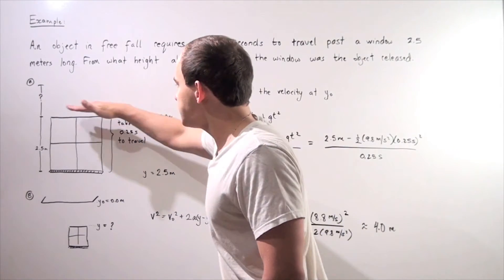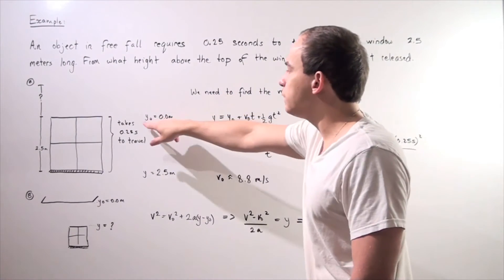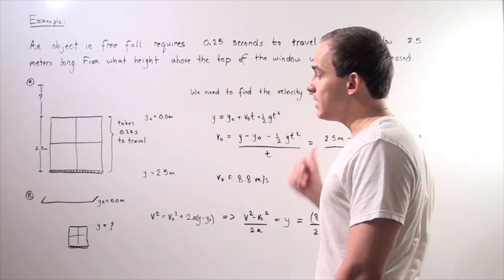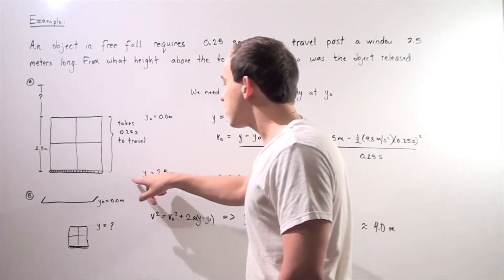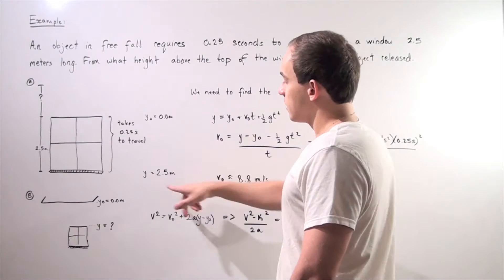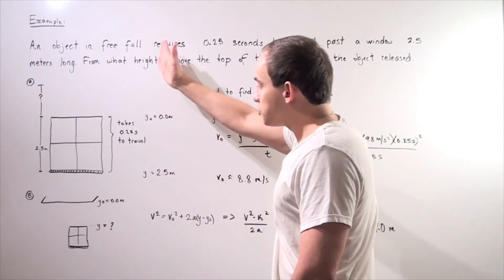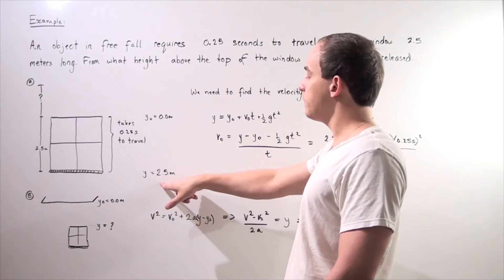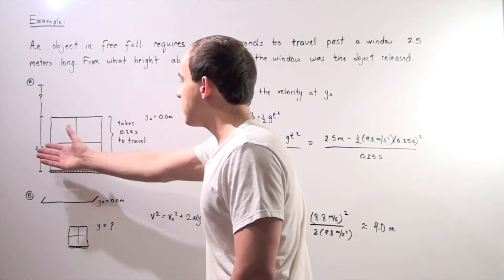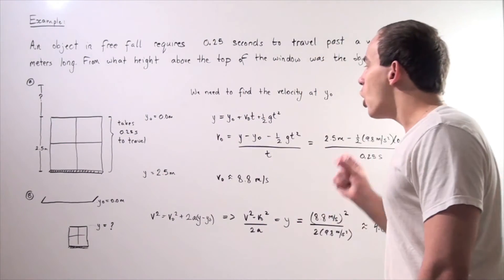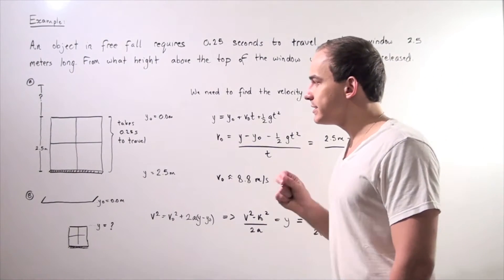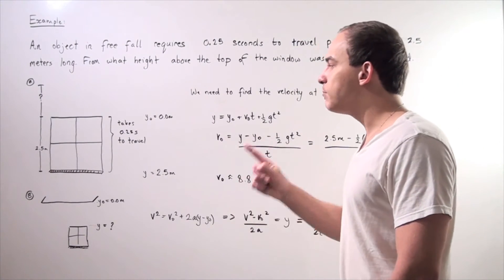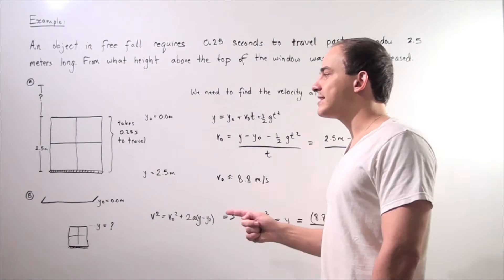At this point we're going to let our y0 be 0.0 meters and this point is our final position of the ball or the object along our y-axis and it's set to be 2.5 meters, the length of our window.